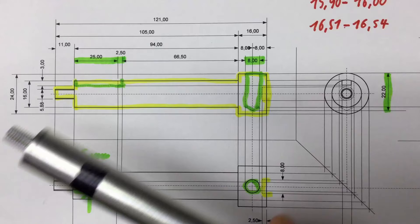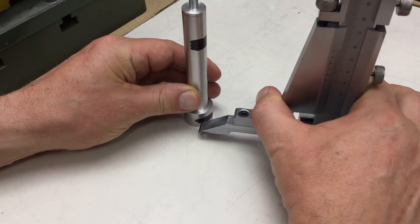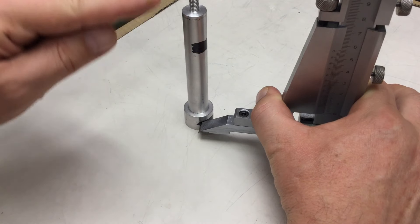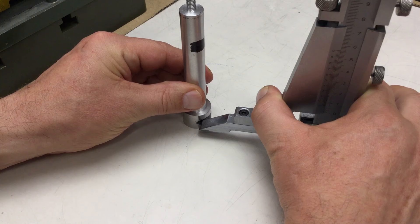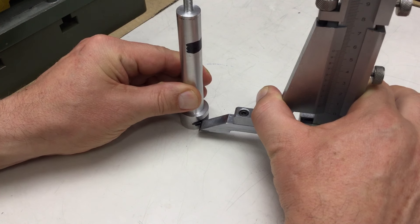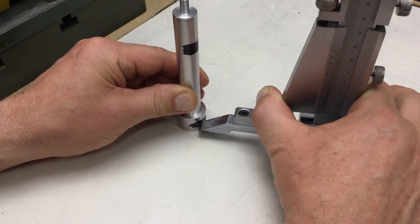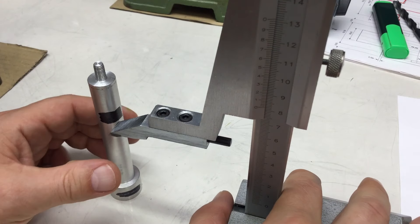The exact measurements are not that critical so I'm just scribing here the lengthwise position, two lines here on my piece, one here at 8 millimeters that should be enough.